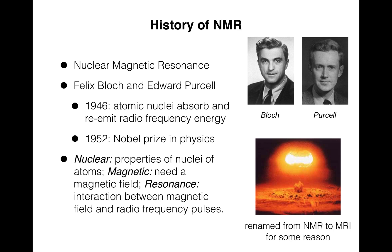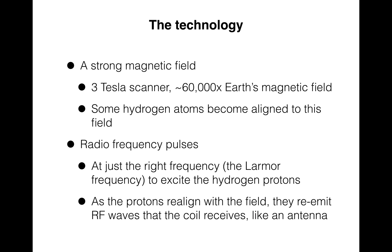Basically there is no ionizing radiation involved — not the same kind of ionizing radiation that you'd get with an atomic bomb. So you need a strong magnetic field. A 3 Tesla scanner is a standard strength; they can go anywhere from 1.5 Tesla to 7 Tesla, and there are even some higher strength fields. A 3 Tesla is already 60,000 times stronger than the Earth's magnetic field — strong enough to pull that wheelchair right into the bore.